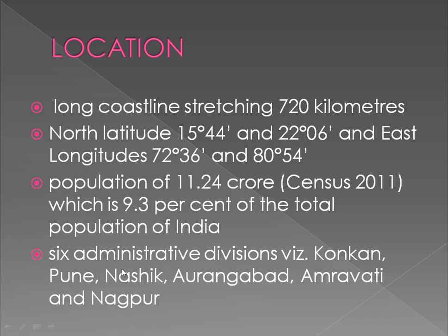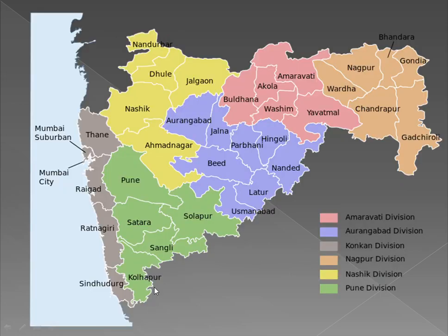For managing such a huge state, it has been divided into six administrative divisions, which are Konkan, Pune, Nashik, Aurangabad, Amravati, and Nagpur. Here we can see all six administrative divisions on the map.